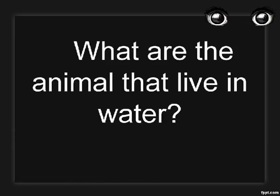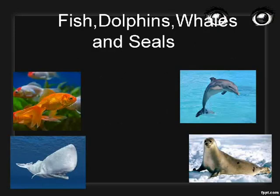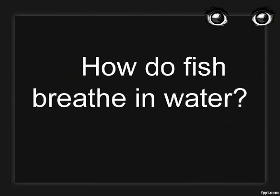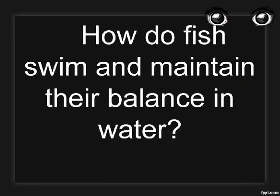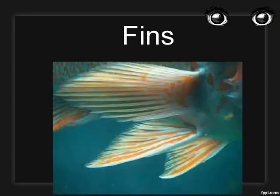What are the animals that live in water? Fish, dolphins, whales, and seals. How do fish breathe in water? Gills. How do fish swim and maintain their balance in water? Fins.